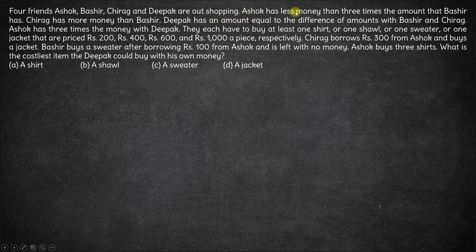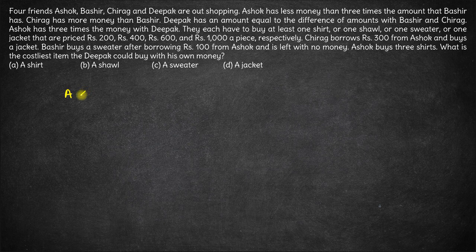Ashok has less money than 3 times the amount that Bashir has. So let's write down each of these in proper equation form: the amount of money with Ashok is less than 3 times the amount of money with Bashir, i.e., A < 3B.